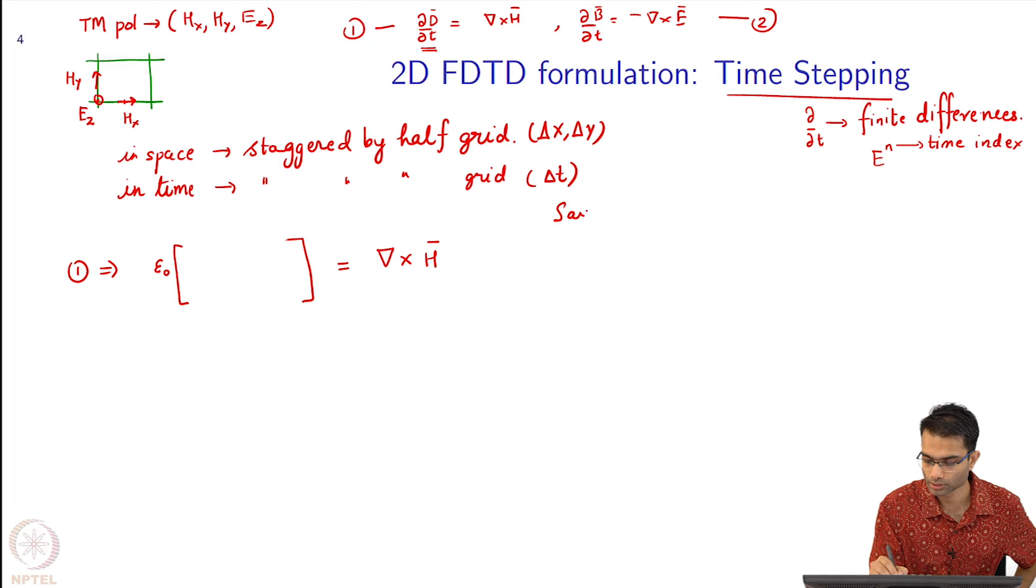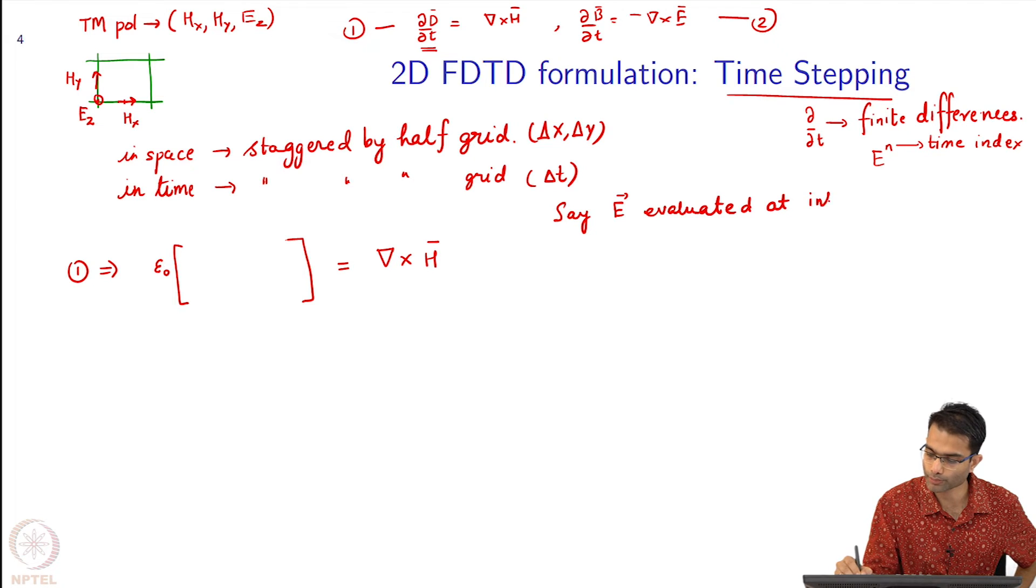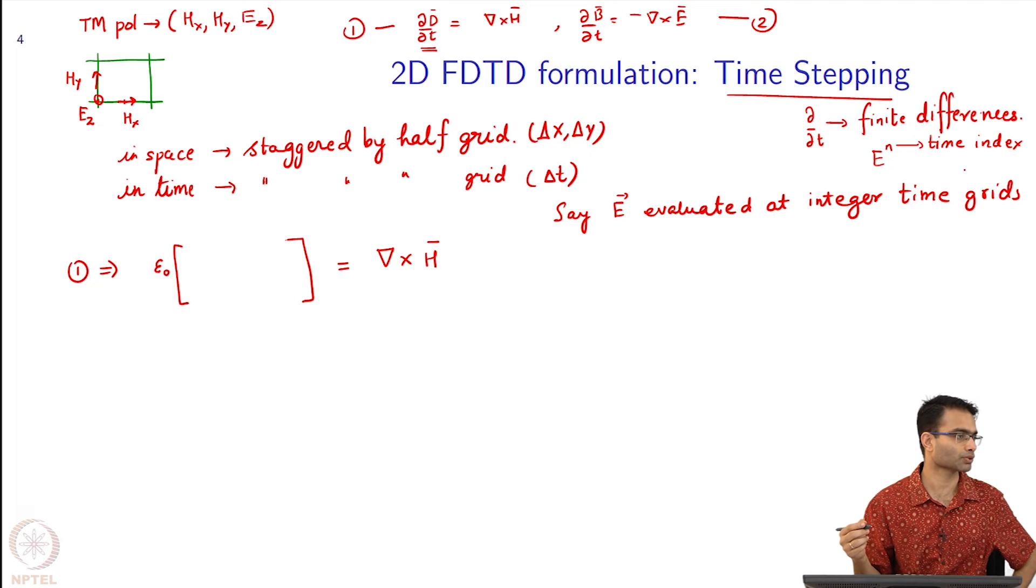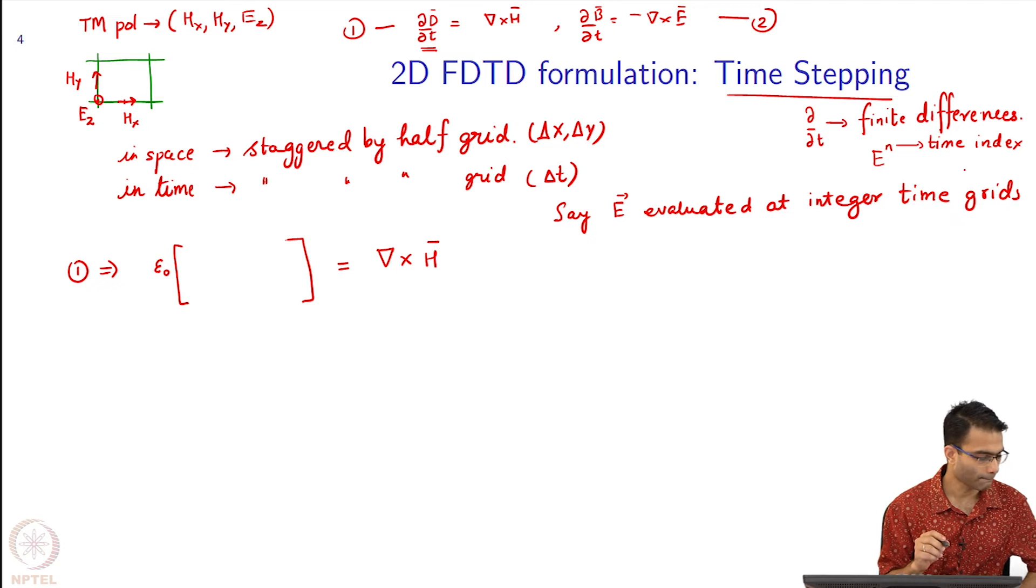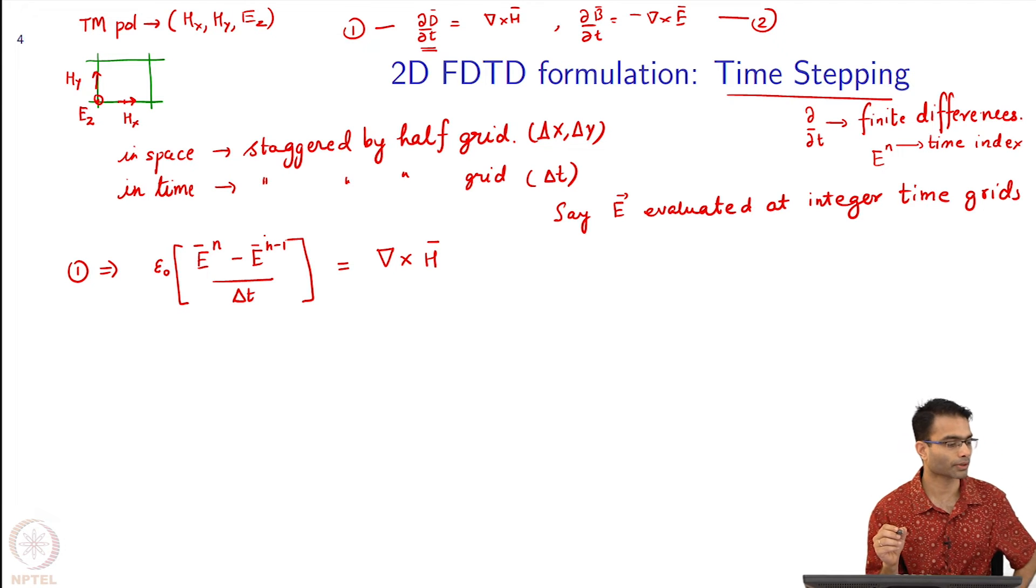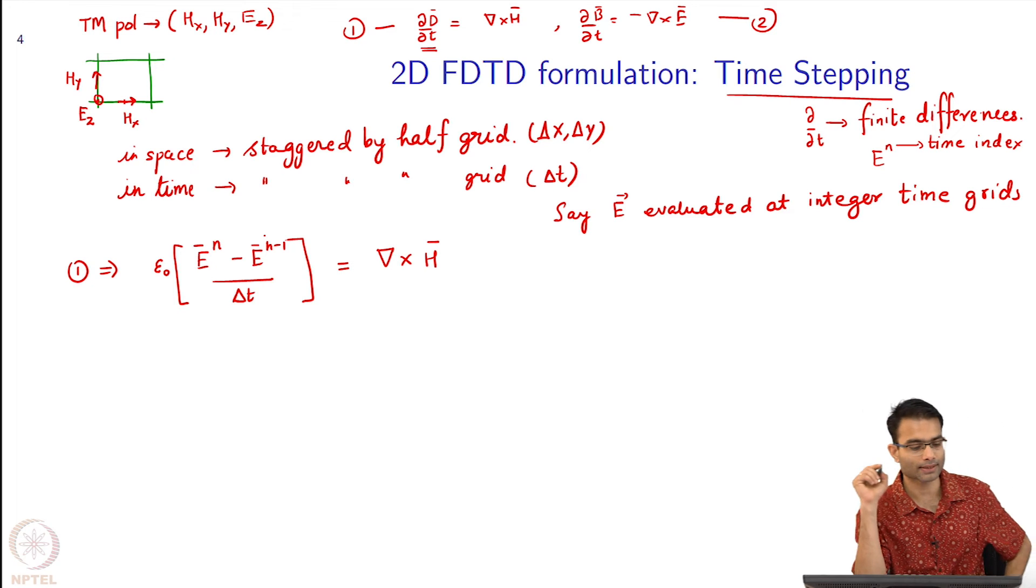Let's say E is evaluated at integer time grids: E^n, E^(n+1), E^(n+2) and so on. What should I write in this square bracket for time derivative? Very simply it should be E^(n+1)_ij minus E^(n-1)_ij divided by Δt. I am writing in vector form right now.